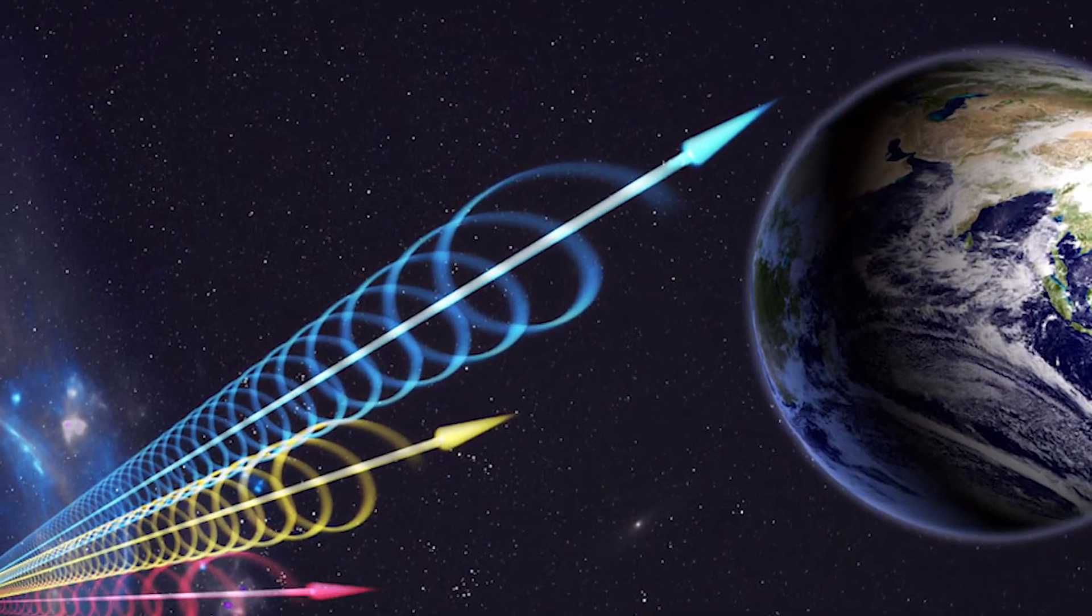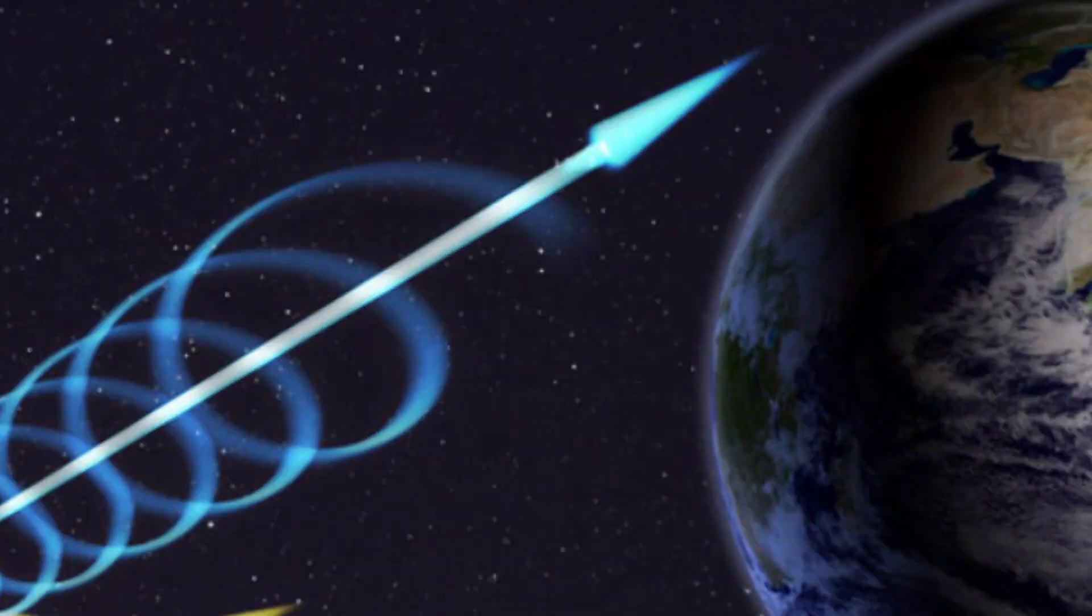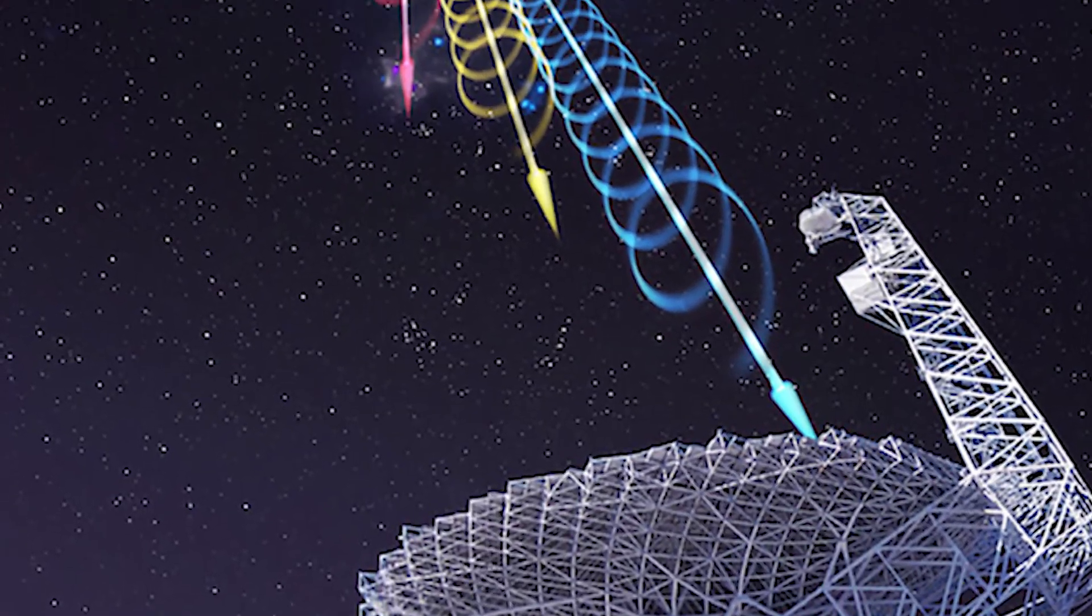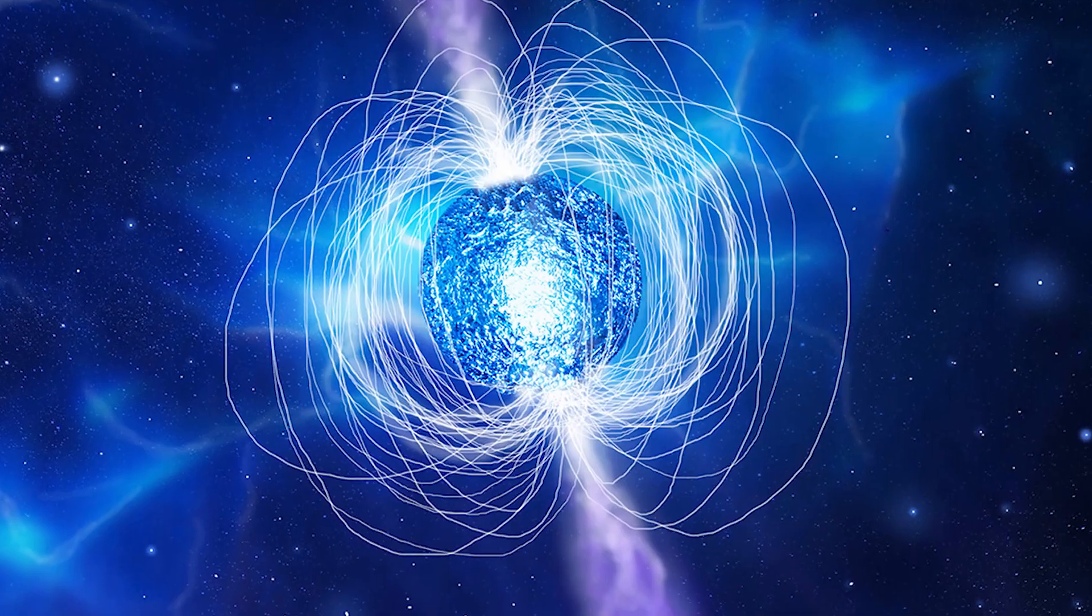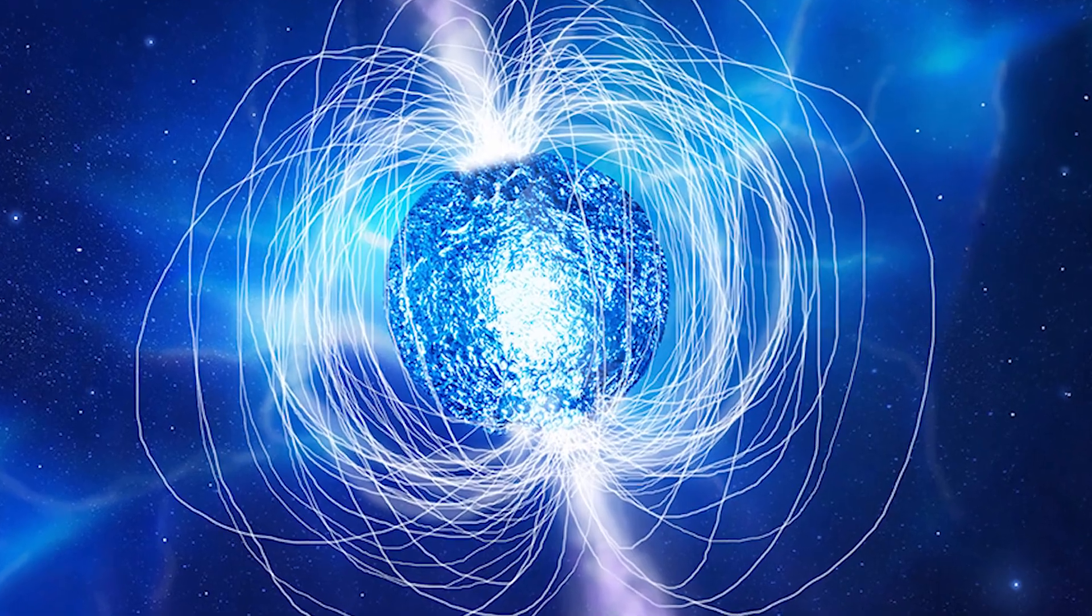So I'm going to tell you about fast radio burst 121102. Fast radio bursts are short pulses of radio emission. They are super short, they only last a couple of milliseconds. Astronomers have been detecting FRBs for the last few years. Most of the time they are easily explained. Lots of things in the universe emit radio waves, like black holes, spinning neutron stars, supernovas.